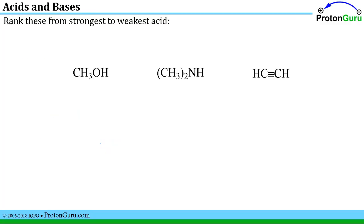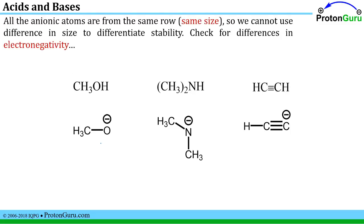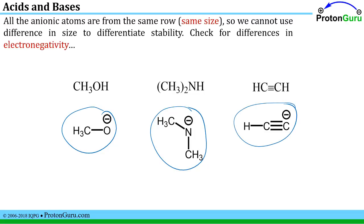Another common problem type is ranking acids from strongest to weakest. Again, we redraw these as their conjugate base forms to find the most stable one — that corresponds to the strongest acid. Looking at these conjugate bases, we need to think about the different structural aspects that influence stability: the size of the anionic atom, its electronegativity, and other factors.